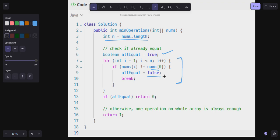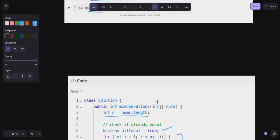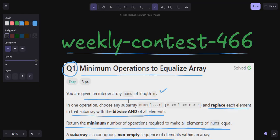If allEqual is true, that means all the elements are the same, return 0. Otherwise, one operation on the whole array is always enough, so we return 1. Very easy problem. I hope you guys are clear with question number one of weekly contest 466.